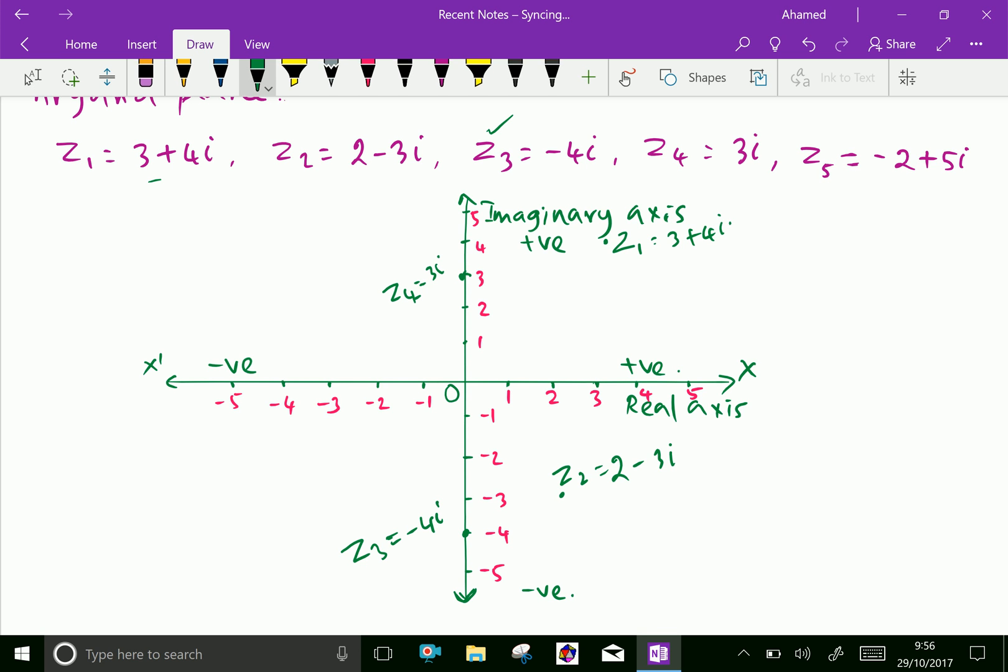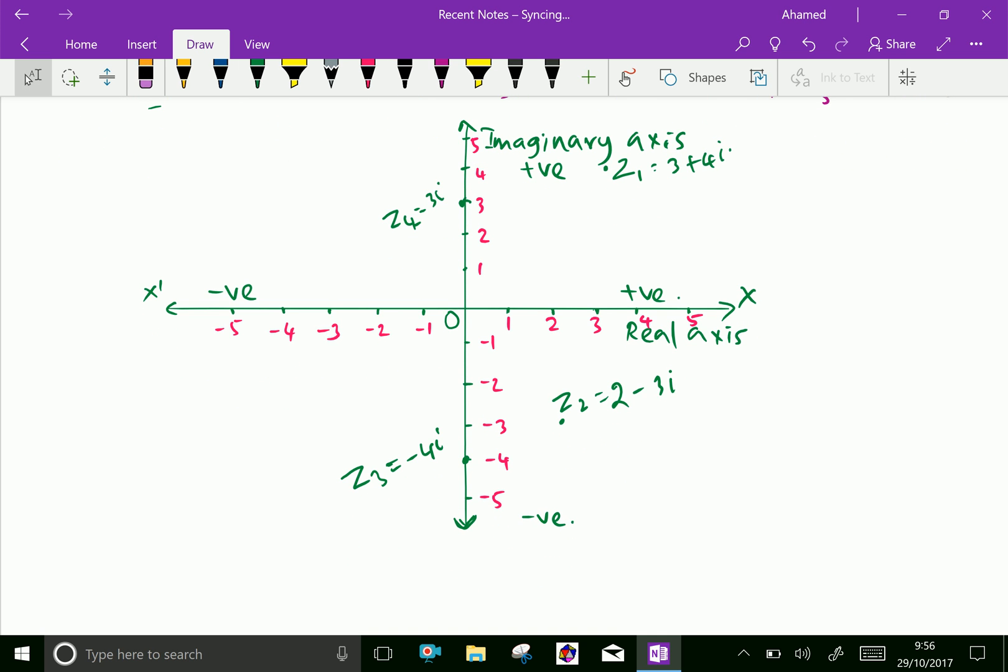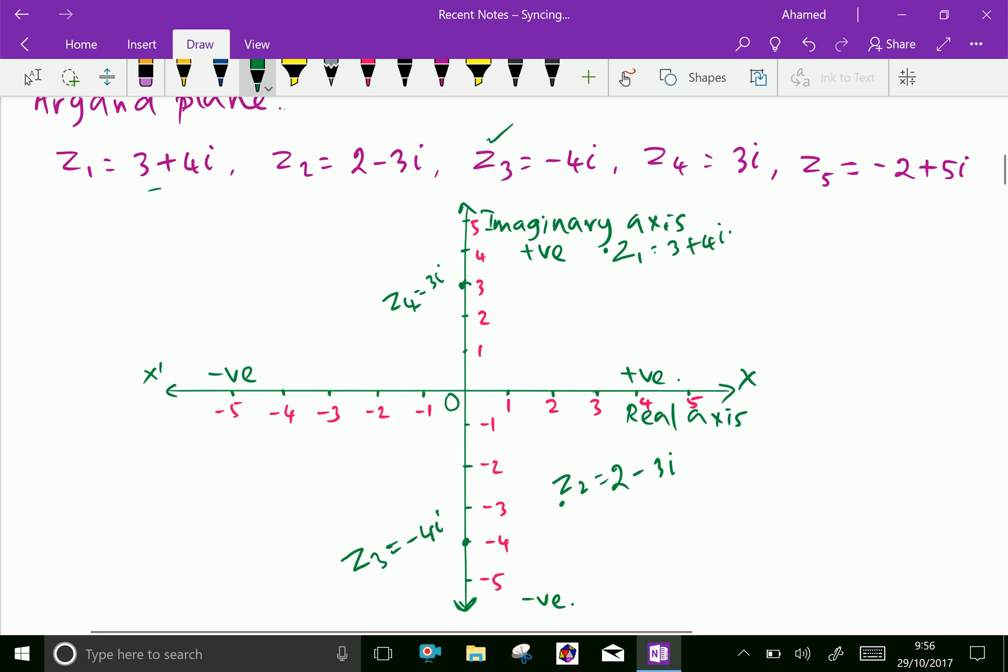Now z5 equals minus 2 plus 5i. That is z5 equals minus 2 plus 5i.